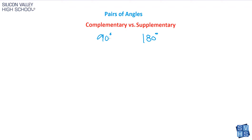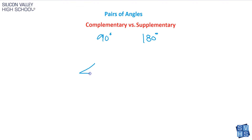A problem might tell you that angle A equals 30 degrees and angle B equals 60 degrees, then ask whether they are complementary or supplementary. You look at them: 30 plus 60 equals 90 degrees, so those two angles are complementary. Or they might say angle A equals 120 degrees and angle B equals 60 degrees — and you'd determine those are supplementary because they add to 180.